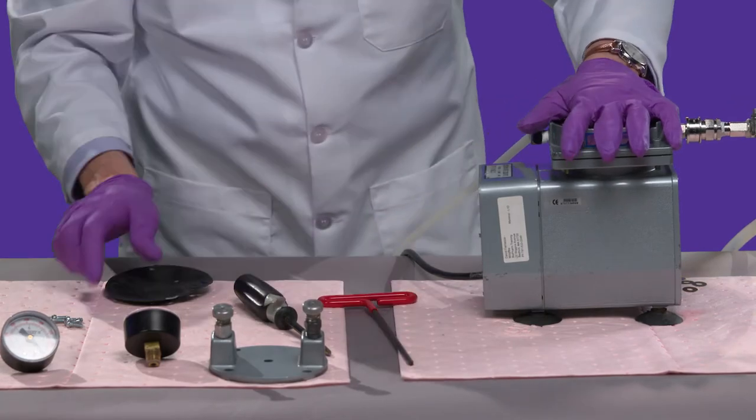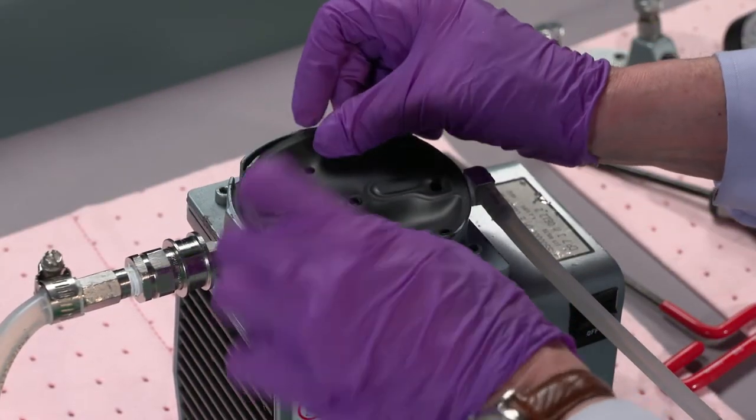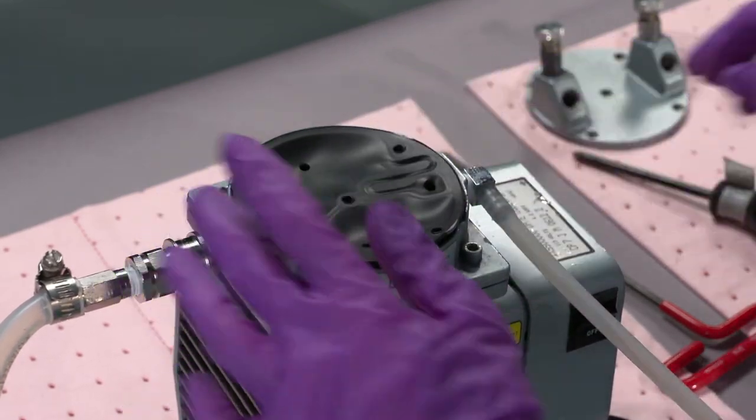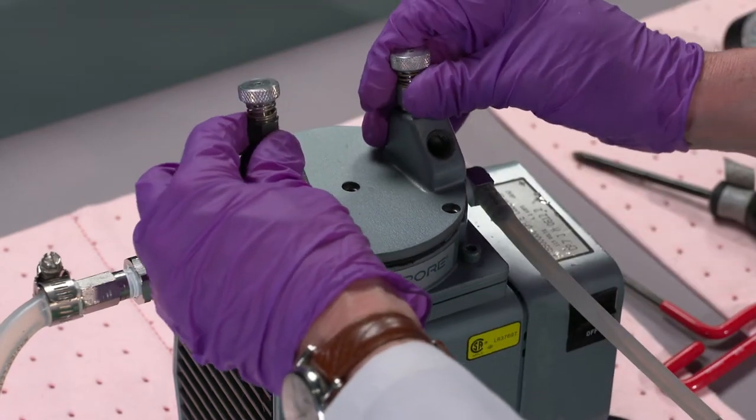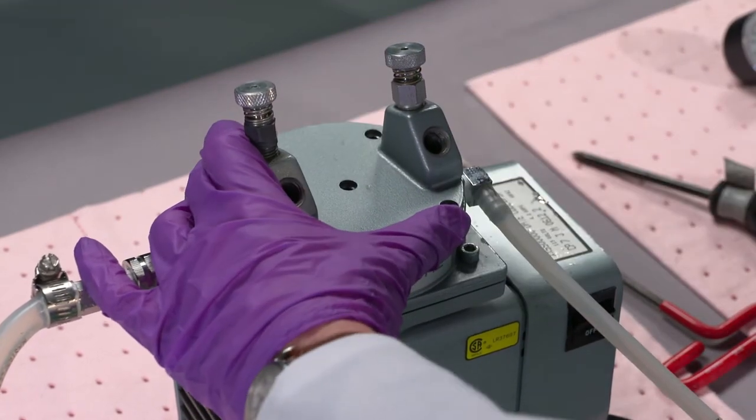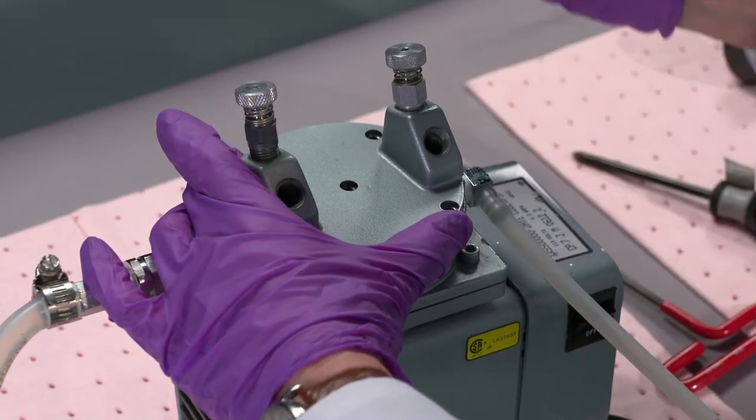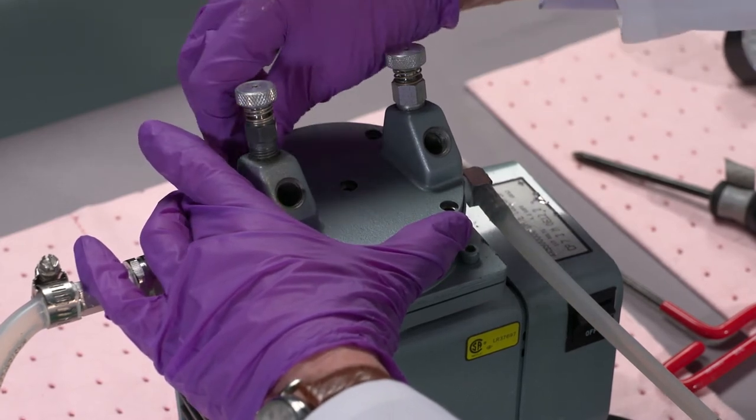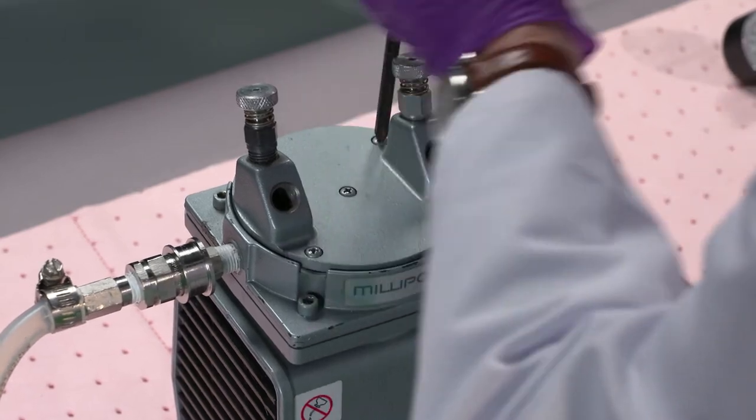Fine. Now the second gasket sits on there like this, and put the top on. And then there are five Phillips head screws that hold this on. Just go around one more time. Make sure they are snug.